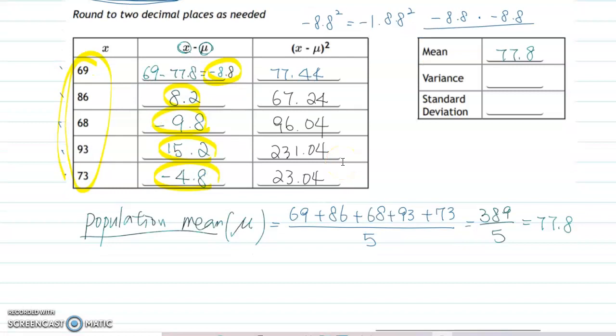So then the next step is you combine this last column. So combine all this data. So 77.44 plus 67.24 plus 96.04 plus 231.04 plus 23.04. Then you get 494.8. But that's not the answer yet. Please be careful. Let's be patient a little bit.